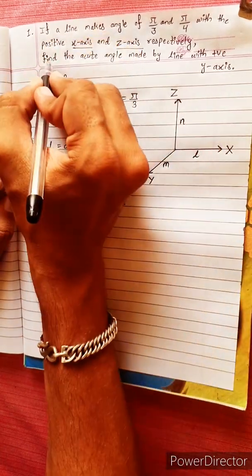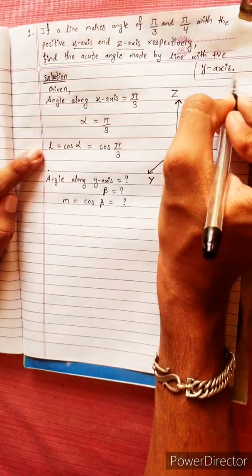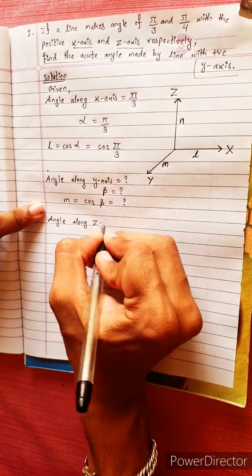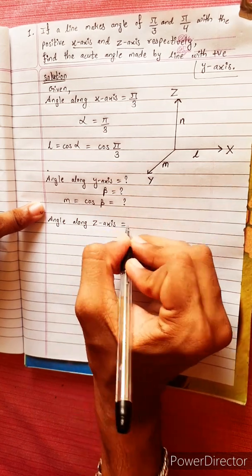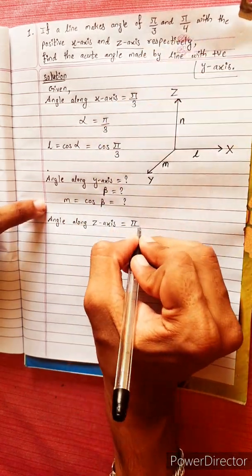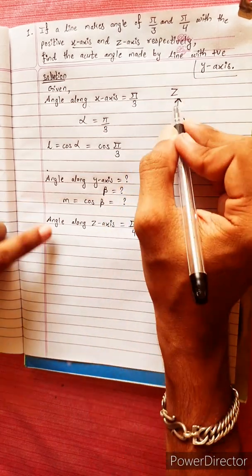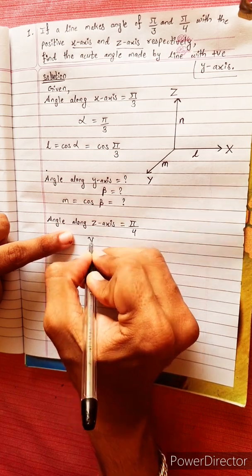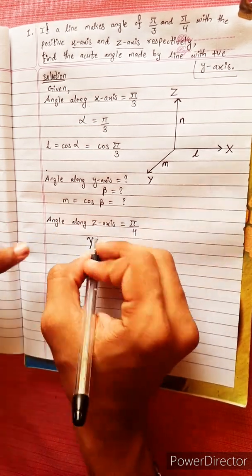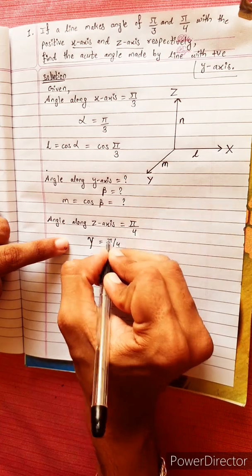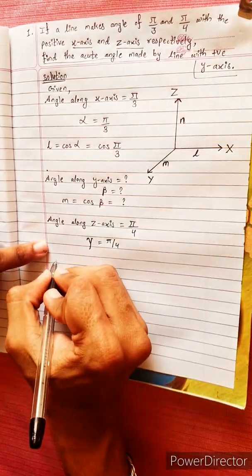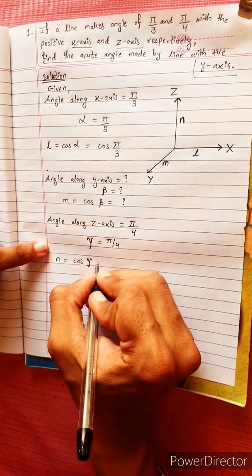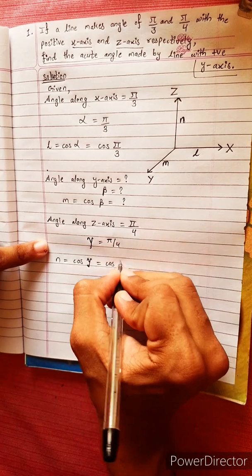We will represent the angle with the positive y-axis. We will also represent the angle along the z-axis. The angle along the z-axis is pi by 4, so gamma equals pi by 4. The direction cosine n equals cos gamma, meaning gamma equals pi by 4, so n equals cos(pi/4).